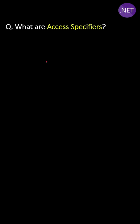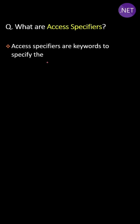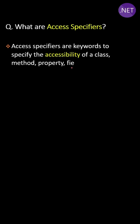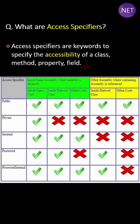What are access specifiers? Access specifiers are keywords used to specify the accessibility of a class method, property, or field. These keywords are public, private, protected, internal, and protected internal.